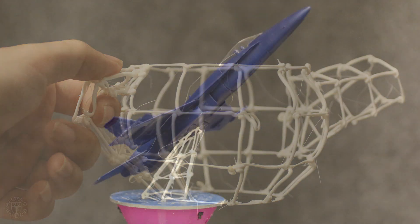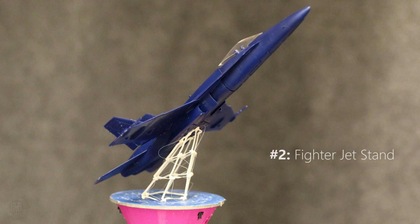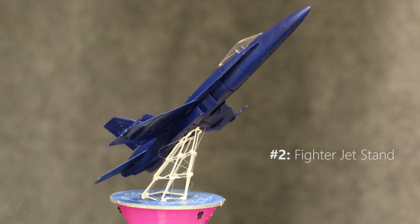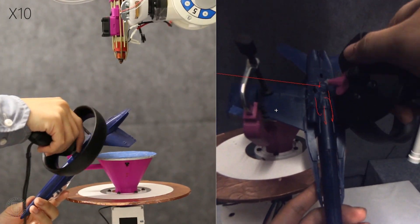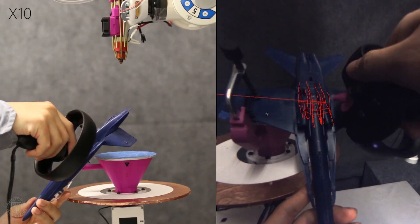ROMA makes it easy to design functional extensions onto existing objects. In this example, the designer builds a stand for a model fighter jet. The designer clamps a fighter jet model onto the platform and quickly scans the fuselage with the AR controller.